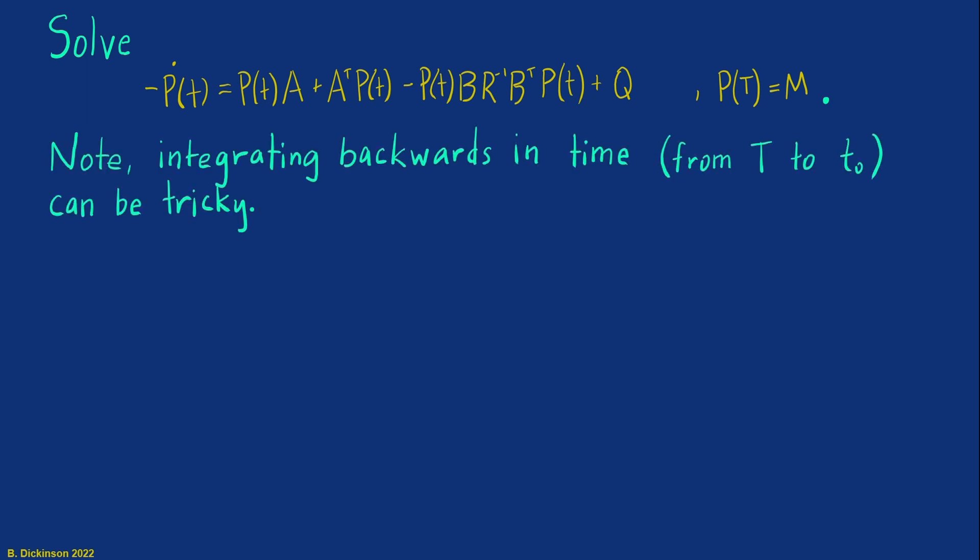The first thing we want to note is that we're working with a final time problem. It's P evaluated at capital T. It can be tricky to integrate backwards in time, so what I want to do is introduce a new variable. I'm going to call it time to go. You can think of it as time left to an event, and our event here is intercept. Time to go is simply the final time or the time of the event minus your present time. So if the current time is zero, then you have capital T seconds to the event. And if you're at the event, then time to go is simply zero.